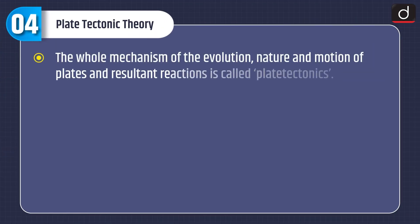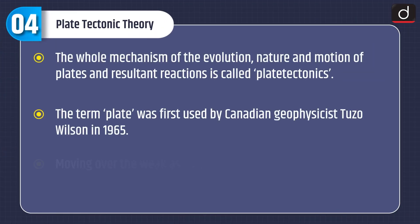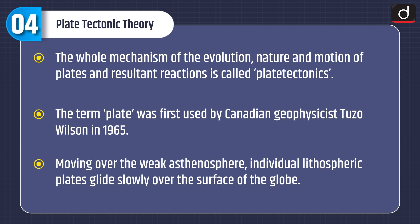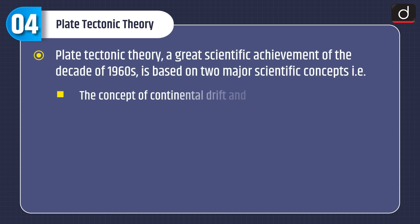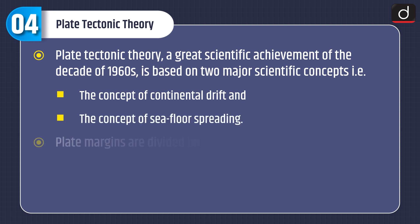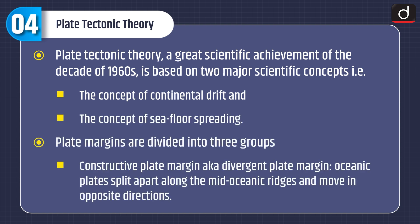Plate Tectonic Theory: The whole mechanism of the evolution, nature, and motion of plates and resultant reactions is called plate tectonics. The term 'plate' was first used by Canadian geophysicist Tuzo Wilson in 1965. Moving over the weak asthenosphere, individual lithospheric plates glide slowly over the surface of the globe. Plate tectonic theory, a great scientific achievement of the 1960s, is based on two major scientific concepts: the concept of continental drift and the concept of seafloor spreading.